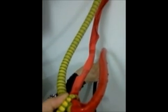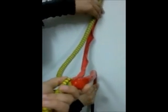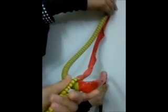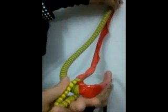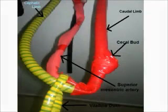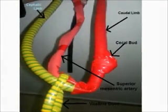After the 90-degree rotation in the herniation, the cephalic limb comes to lie on the right side and the caudal limb comes to lie on the left side, and the coiling of small intestinal loops and the formation of the cecal bud is complete.